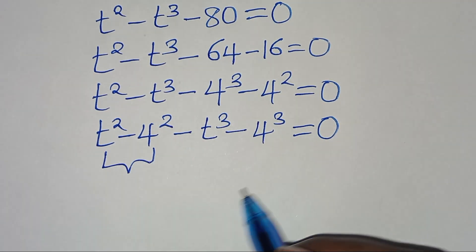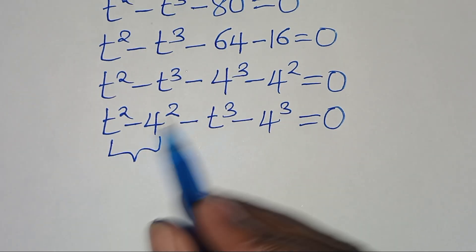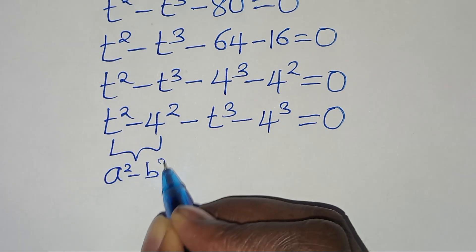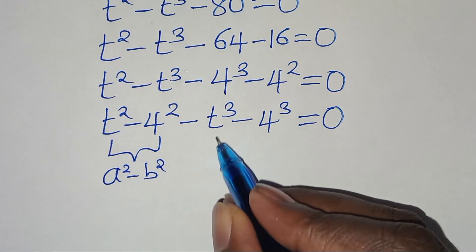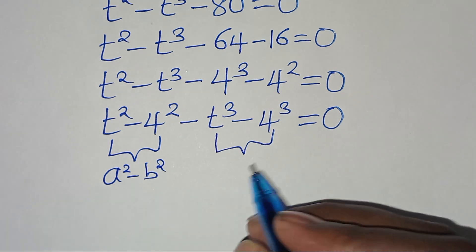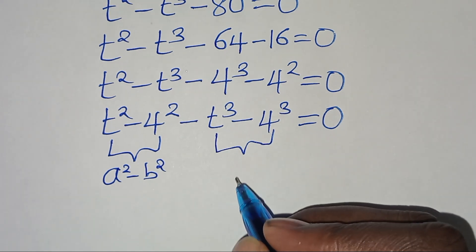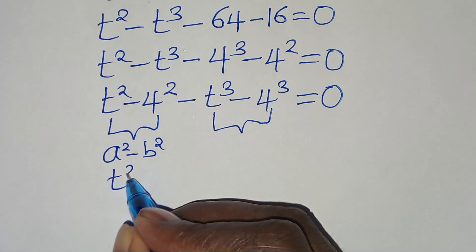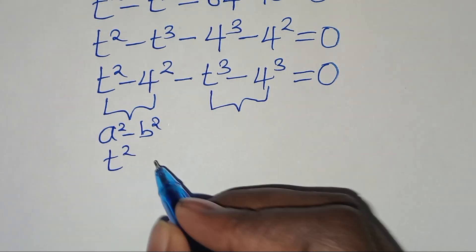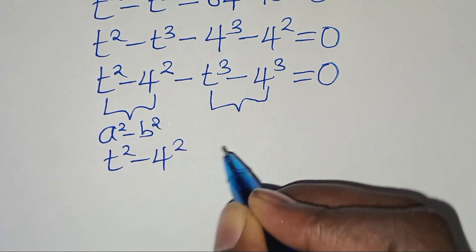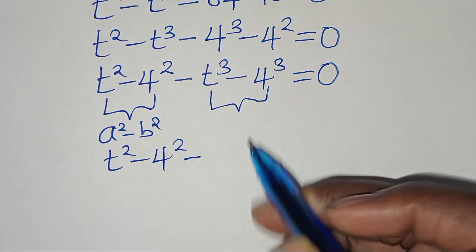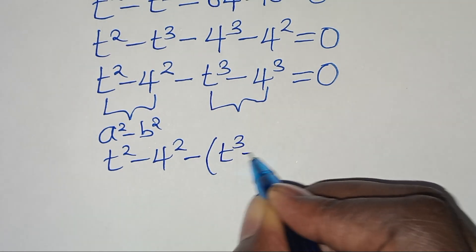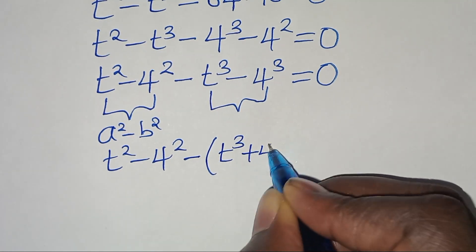Now we have two parts here. The first part is the difference of two perfect squares expressed as a squared minus b squared. The second part, we can express this as t to the power of 2 minus 4 to the power of 2, minus t to the power of 3 plus 4 to the power of 3, equal to 0.